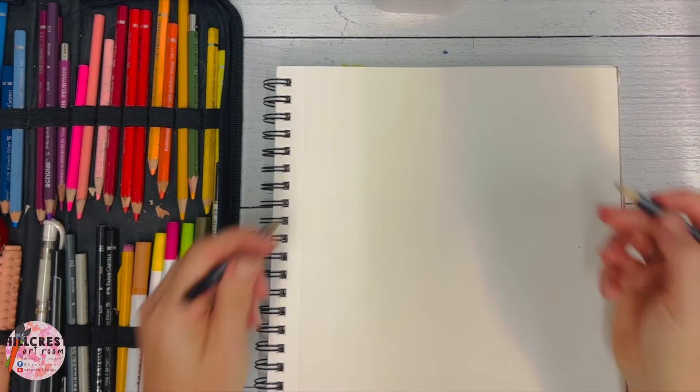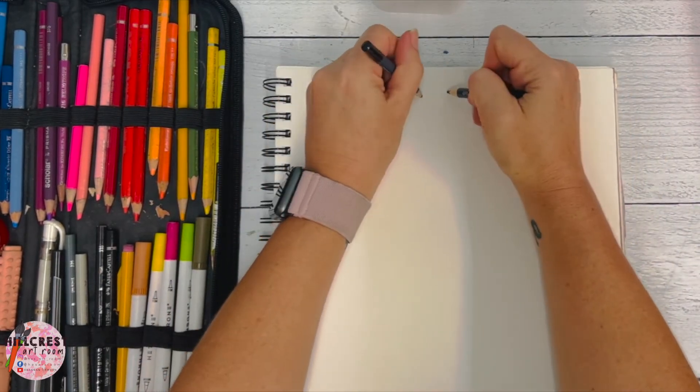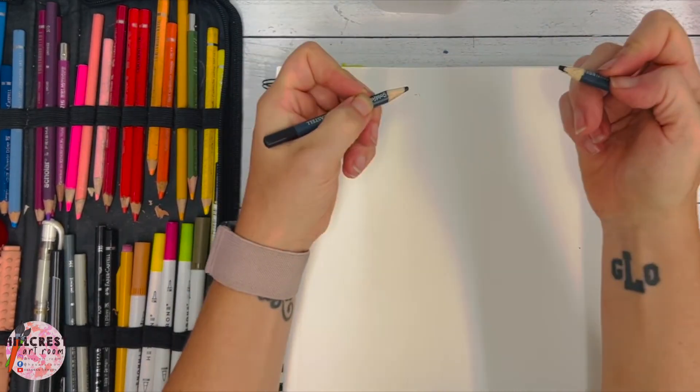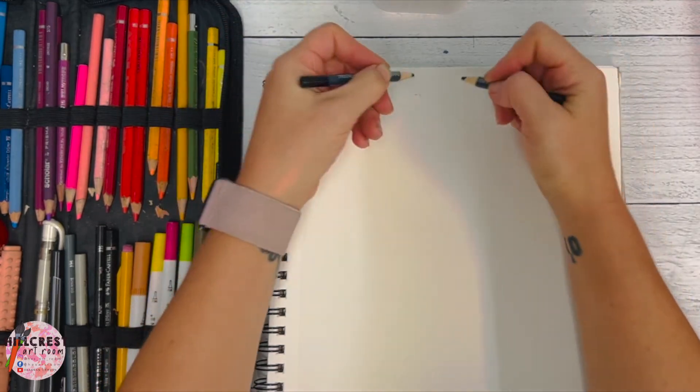This is another one we can do today. Flip it over and you're just going to draw the same type of line. So whatever your dominant hand is, for me it's my right, I'm going to copy with my left.